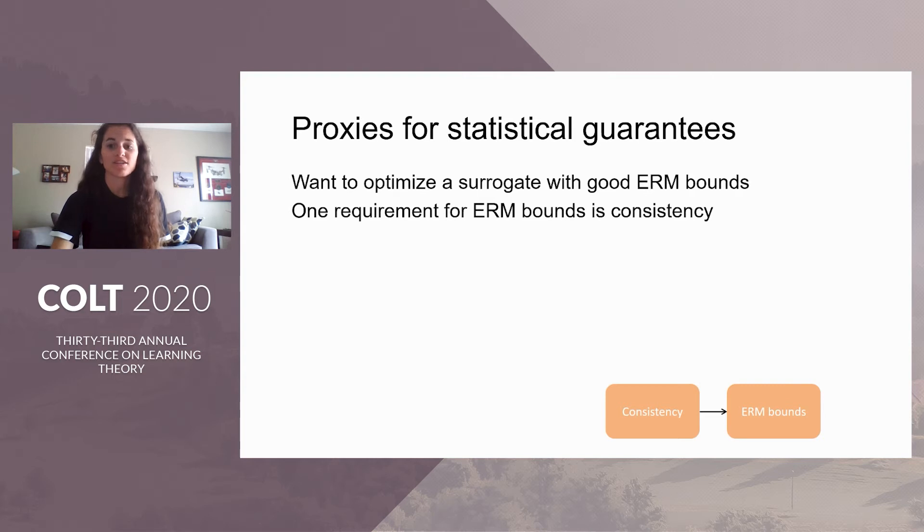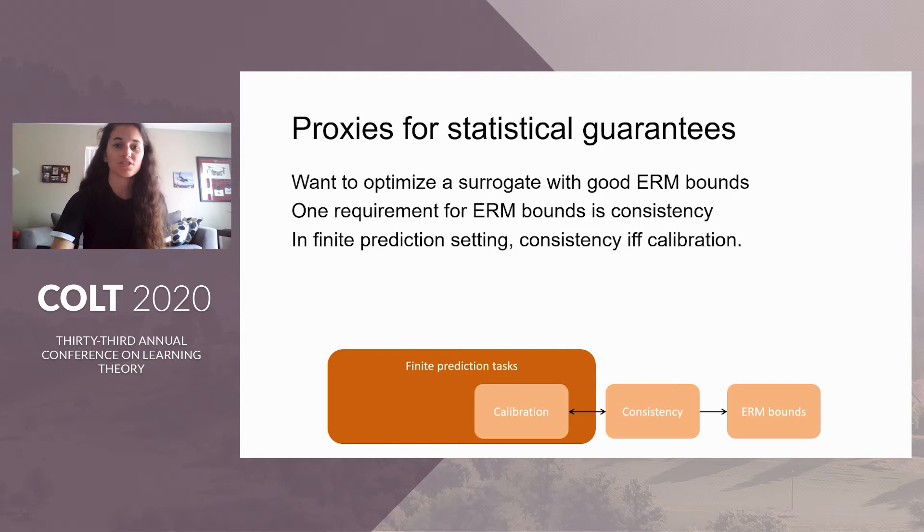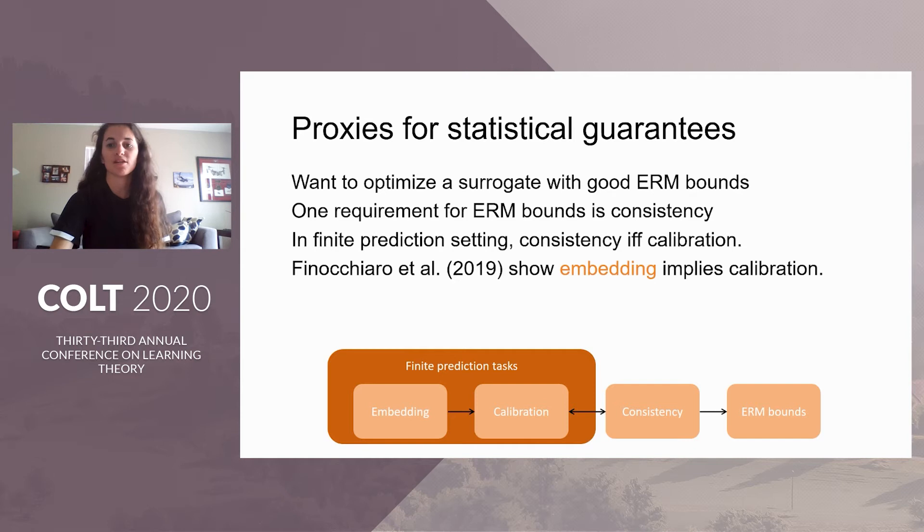In the finite prediction setting, Bartlett et al. in 2003 and 2006, along with Zhang in 2004 and Tewari and Bartlett in 2007, show that consistency is equivalent to calibration in the finite prediction setting. And Finnechiaro et al. in 2019 show that embedding implies calibration. This embedding setting is where we'll be focusing for the rest of the paper. Moreover, we focus on polyhedral or piecewise linear and convex losses, since their work shows that embedding can be done by a polyhedral loss.